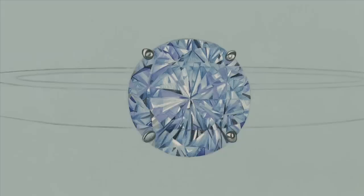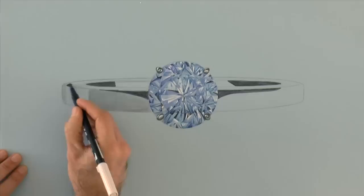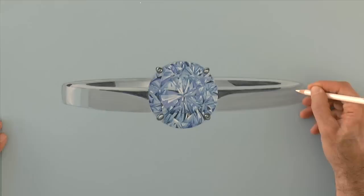With gray markers of different tones we can do the reflections on the actual ring. And then with white give it some highlights.